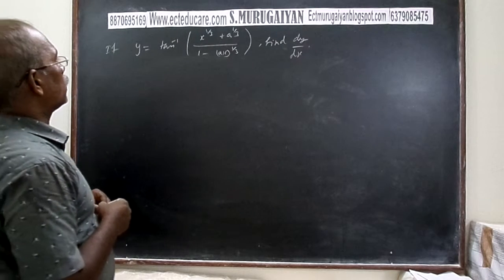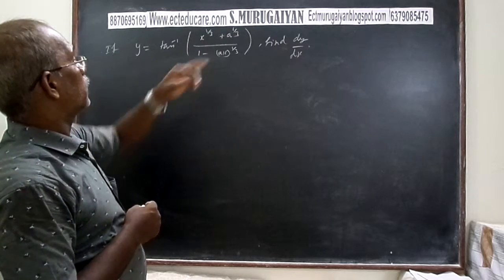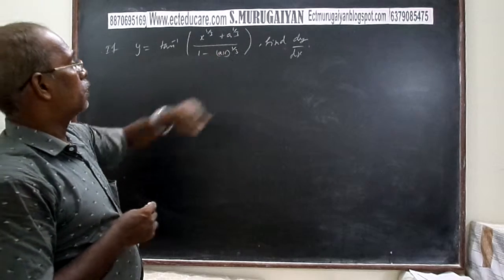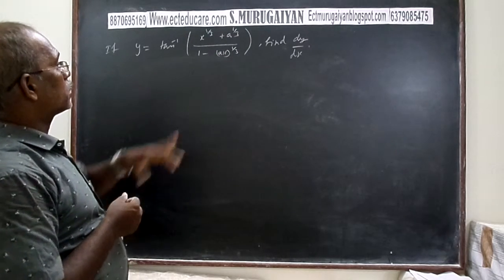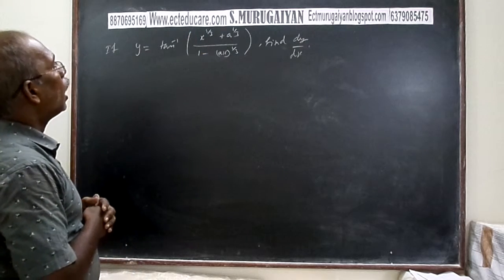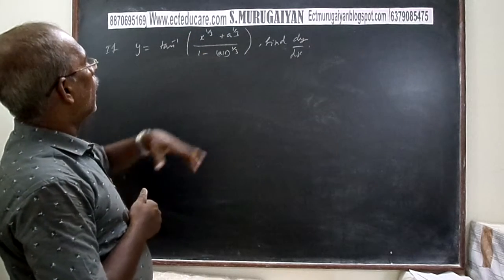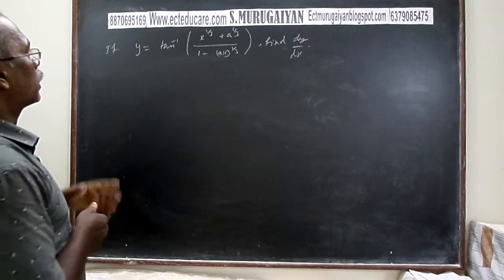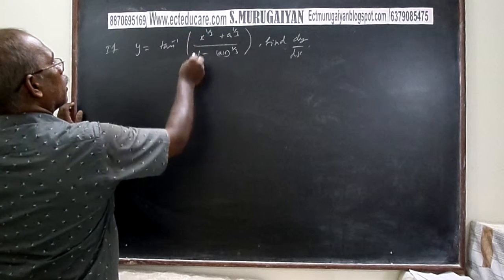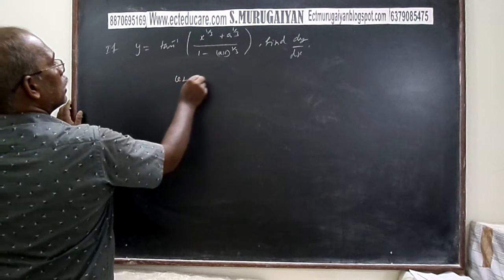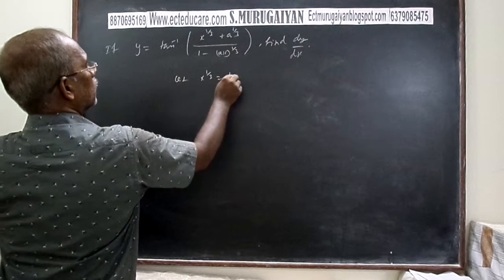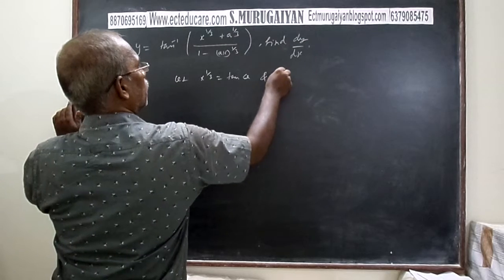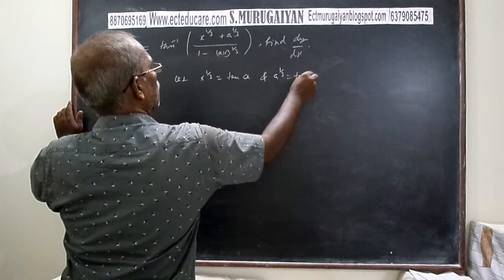The next question is: y = tan⁻¹((x^(1/3) + a^(1/3)) / (1 - ax^(1/3))). We will use a suitable substitution to simplify. Let x^(1/3) = tan α and a^(1/3) = tan β.